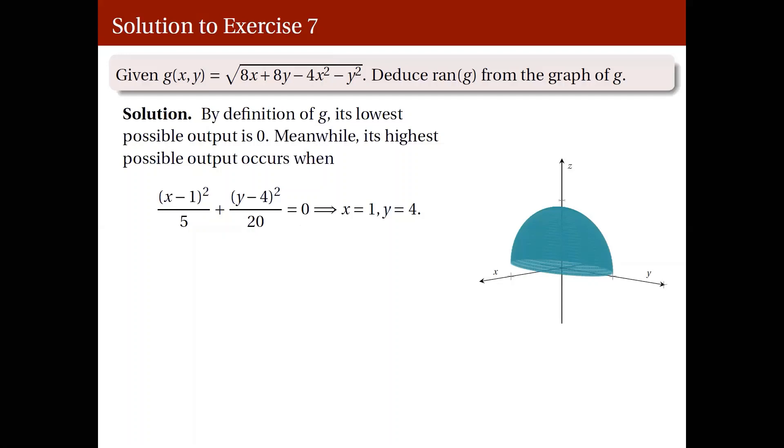And when we plug it in to your g(x,y), we should get square root of 20. Just verify that. Anyway, that will give us the highest possible output. Which now allows us to form the range of g. Interval, closed interval, 0 to square root of 20.